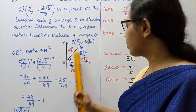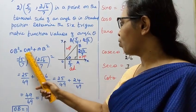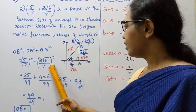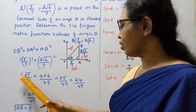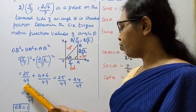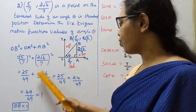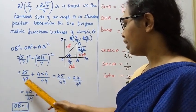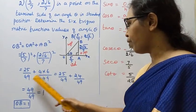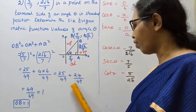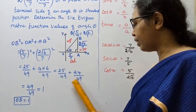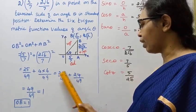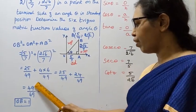Using the Pythagorean theorem: OB² = OA² + AB². OB² = (5/7)² + (2√6/7)² = 25/49 + 4×6/49 = 25/49 + 24/49. Since the denominators are the same, we add the numerators: (25 + 24)/49 = 49/49.